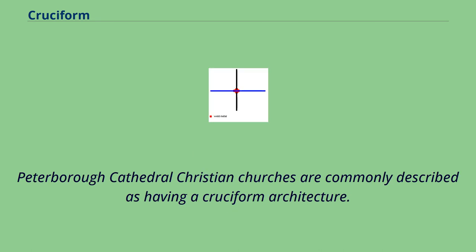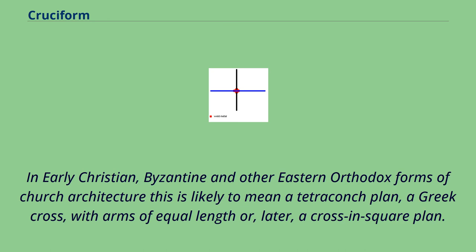Peterborough Cathedral. Christian churches are commonly described as having a cruciform architecture. In early Christian, Byzantine and other Eastern Orthodox forms of church architecture, this is likely to mean a tetrachonk plan — a Greek cross with arms of equal length — or, later, a cross and square plan.